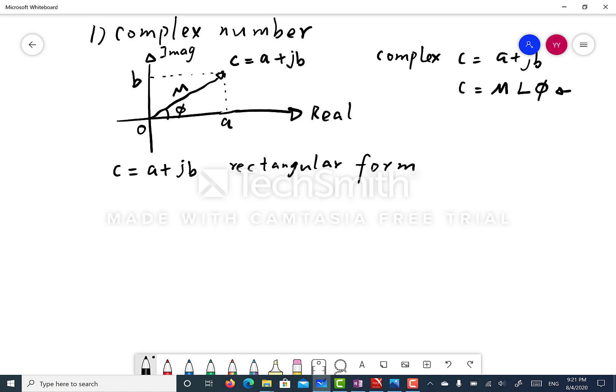It can also be represented as m times e to the j times phi, and this is known as the exponential form or polar form.